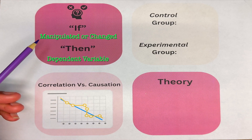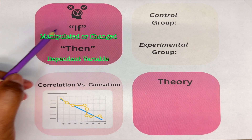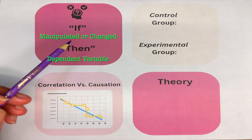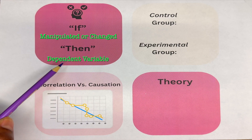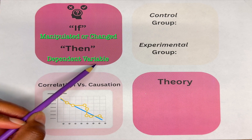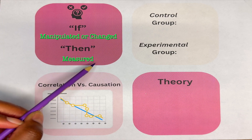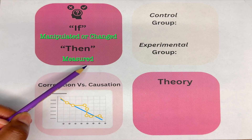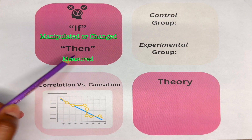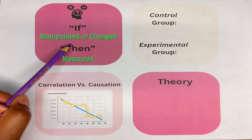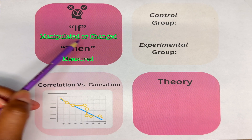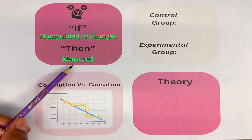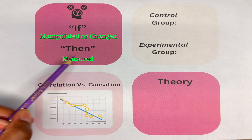So if I change my shoes, the dependent variable — what is measured — is the pain in my feet. If I change my shoes, then my feet will stop hurting.